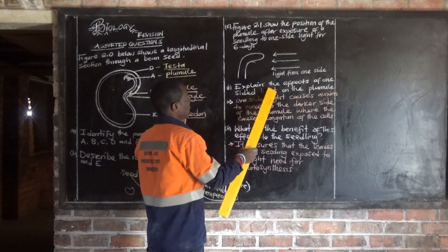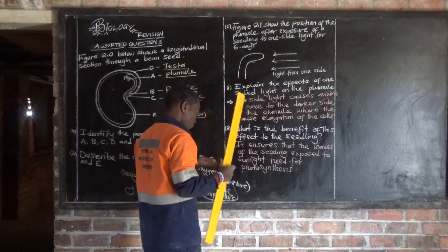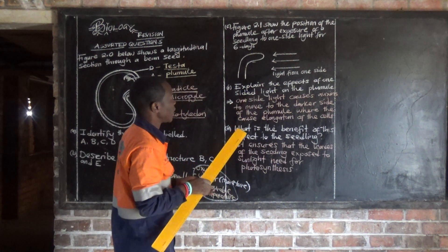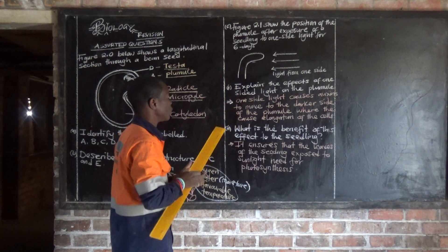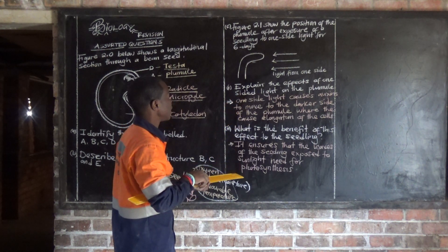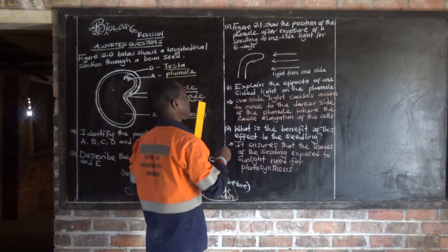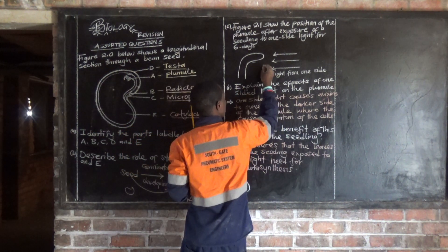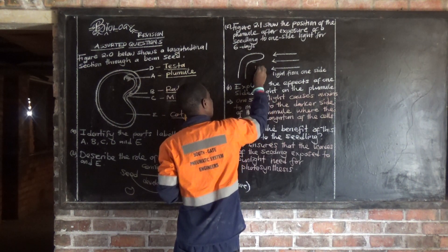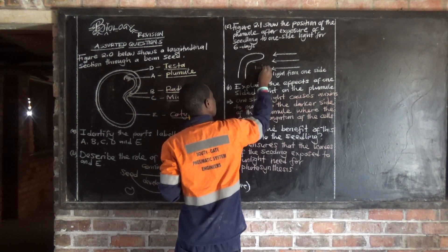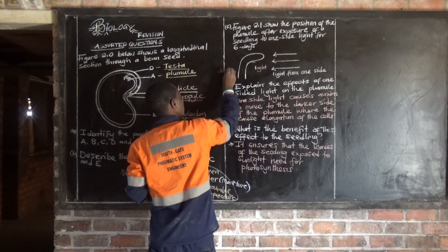Explain the effects of one-sided light on the broomlet. If light is coming from one side, you have the light part on one side and the dark part on the other side. Under plant growth, we talk about a hormone called auxin, which is a hormone that promotes growth in plants.